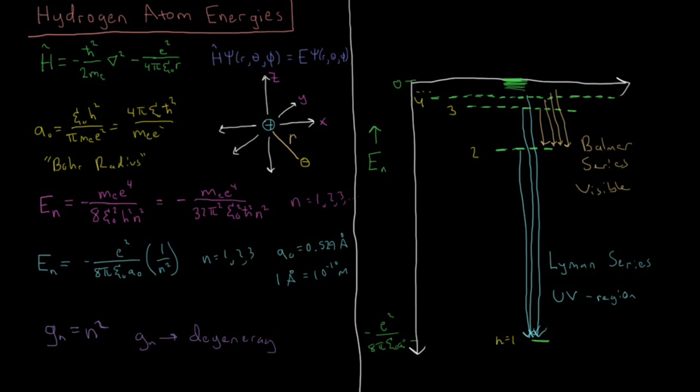And then the Paschen series would be from things going down to n equals 3. That was the Paschen series, and that was in the infrared.